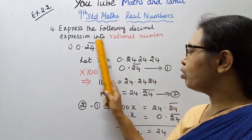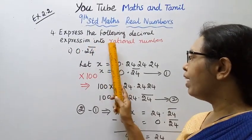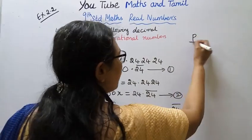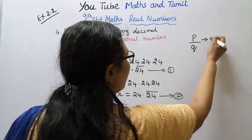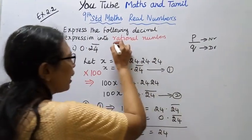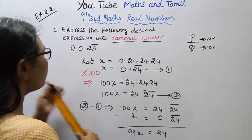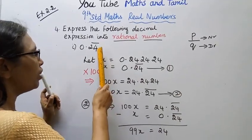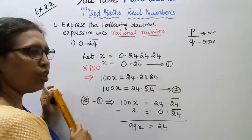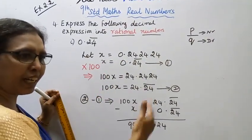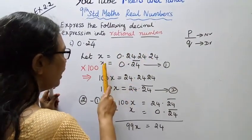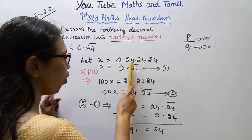Decimal 0.24̄ having the decimal, the rational expression in the formula P by Q, numerator by denominator. Let x equal to 0.242424, non-terminating recurring expansion. x equals 0.24 bar.